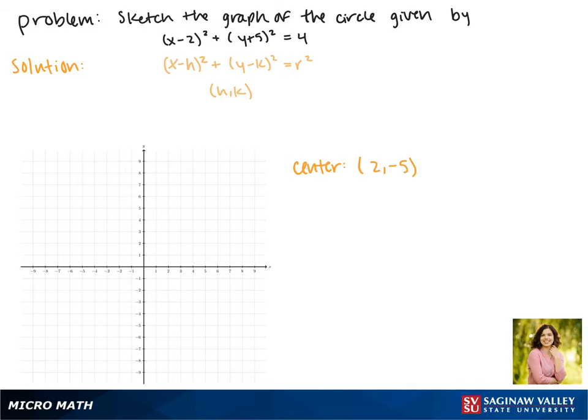Next we need to find the radius of our circle. Since r squared is equal to 4, that makes the radius of our circle equal to 2.